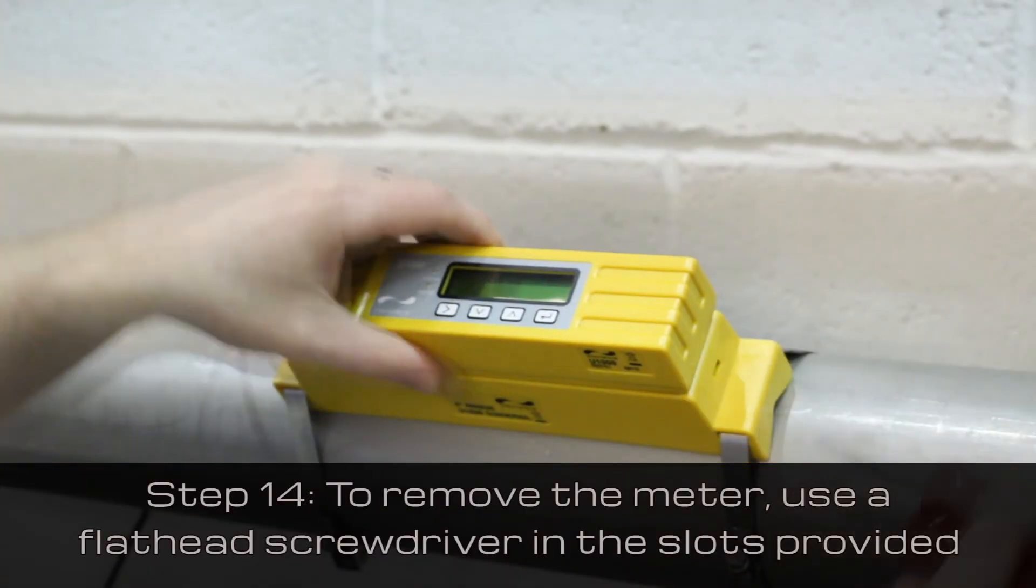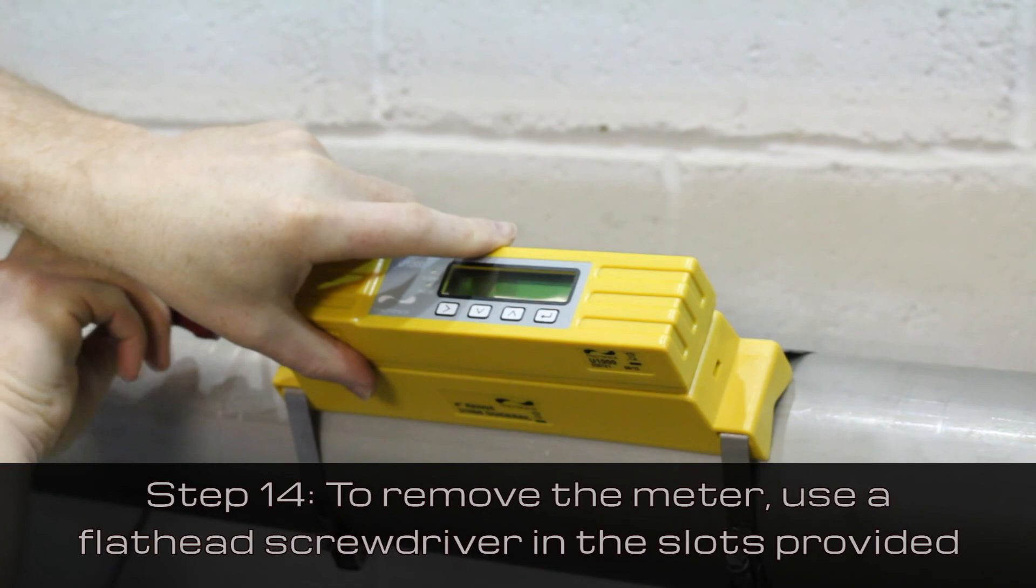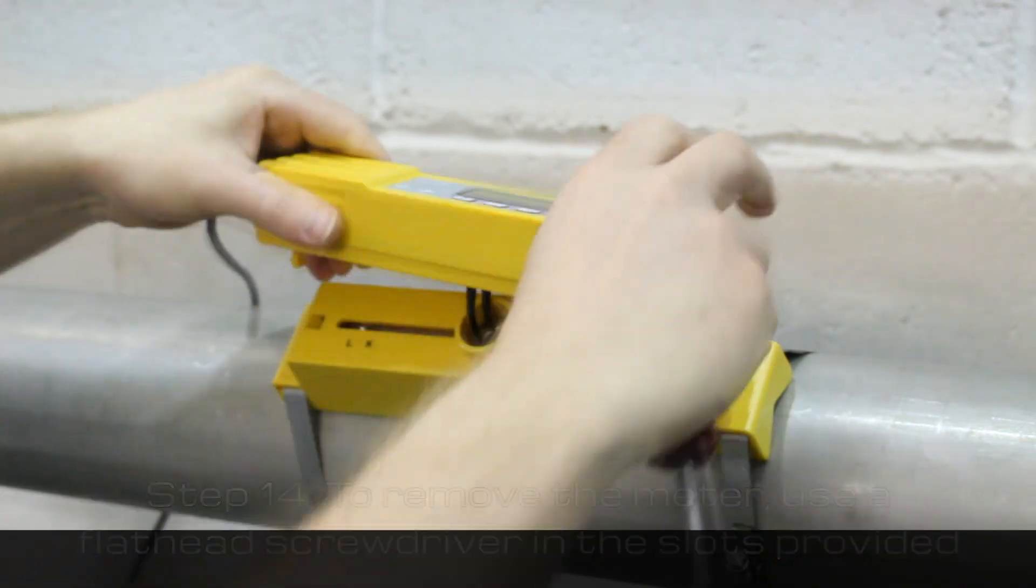To remove the meter from the guide rail, simply use a flathead screwdriver in the slots provided. Thank you.